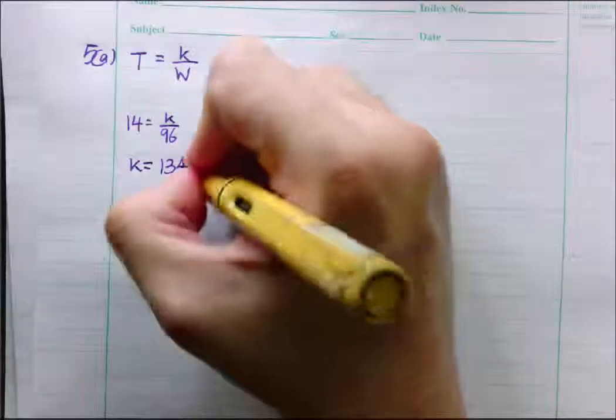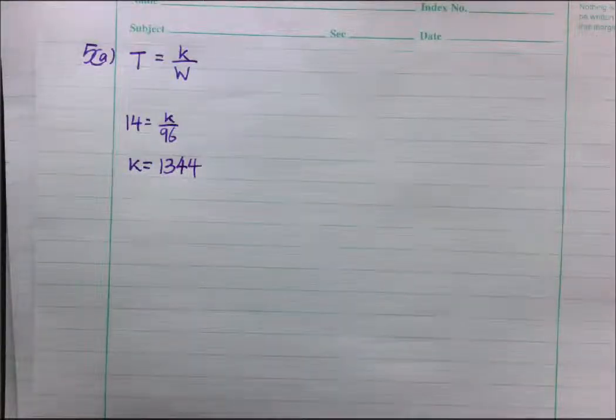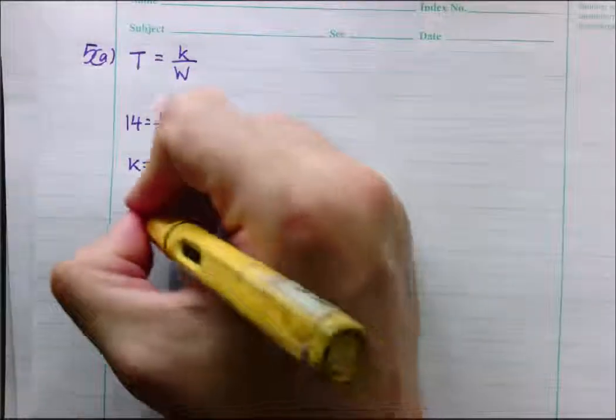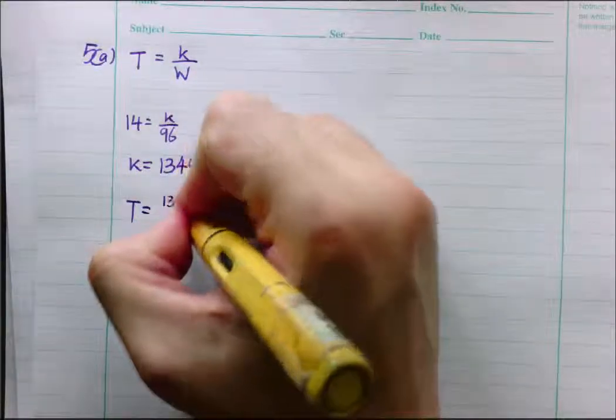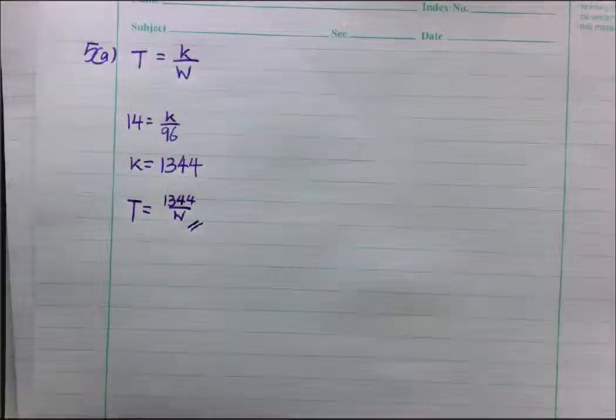k is 1,344. Then, what happens here is do not forget to write down the equation. So, the equation is T equals 1,344 over W. And that is 5a.